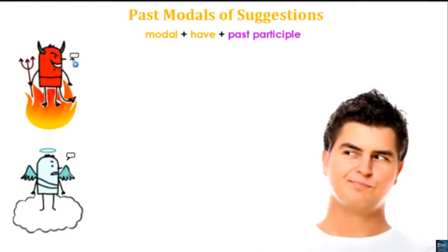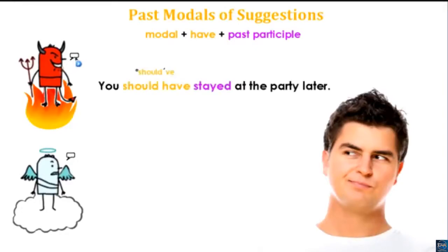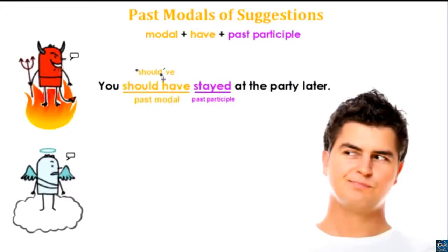One suggestion his bad side gave him: 'You should have stayed at the party later.' Looking at the grammar, we have the past modal 'should have' — and the contraction sounds like 'should've.' So: 'You should have stayed at the party later.' This is a regular past participle, so it looks like the past tense but it is the past participle.